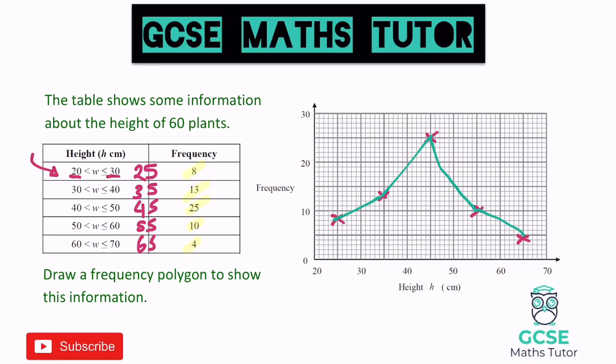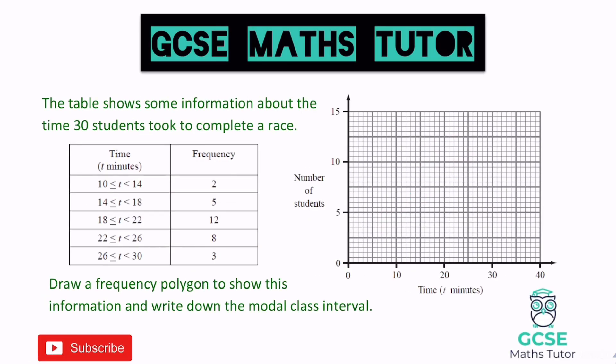Let's have a look at one more. Okay, so this one's a little bit more interesting because the scale's a little bit different on this one, but essentially we're going to be doing the same thing, although it does say in the final line here it says draw a frequency polygon to show this information and write down the modal class interval. Okay, so we're going to have a look at that word there, that modal class interval in a sec, but let's actually go about drawing this frequency polygon. So in between 10 and 14 for this first class, in between 10 and 14 is 12, and then we have 16, 20, 24, and 28.